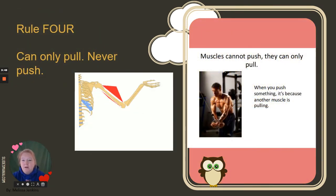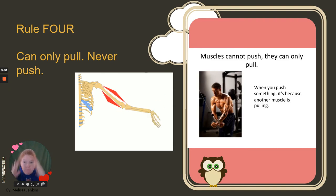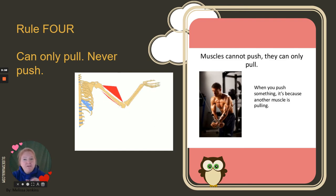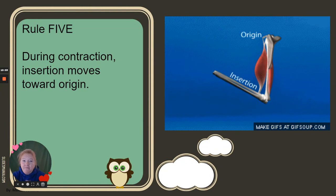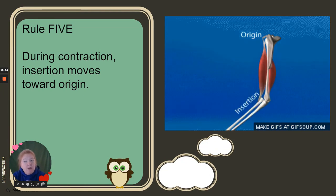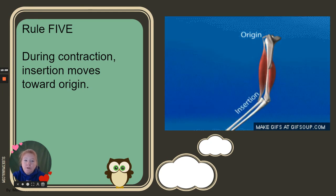Muscles can only pull — they never push. Yes, you can do a push-up, but that's because other muscles are pulling. And rule five, which you already saw in the animation: during contraction, the insertion moves toward the origin.